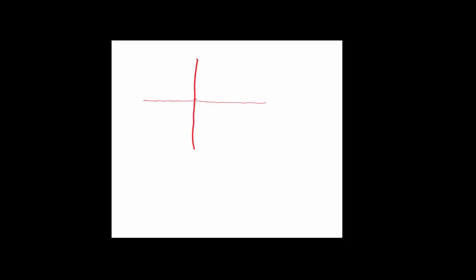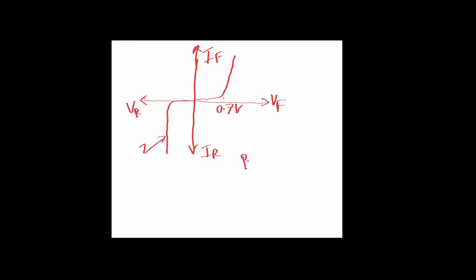Let's look at the VI characteristics of a normal diode. In the forward bias region the current increases drastically as long as the voltage across the diode reaches 0.7 volts — this is the forward voltage and this is the forward current. In the reverse characteristics, if you increase the reverse bias voltage, the diode is essentially an open circuit, and eventually you reach what is called normal breakdown — this is for a normal PN junction diode.